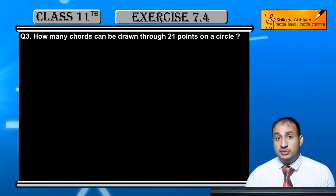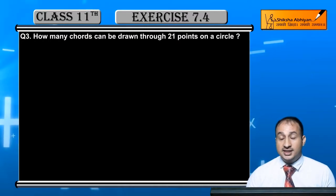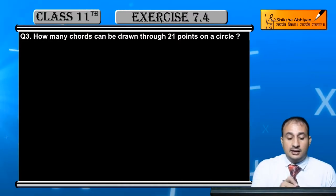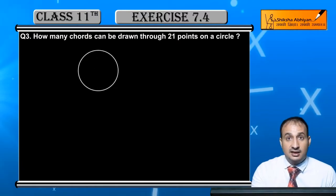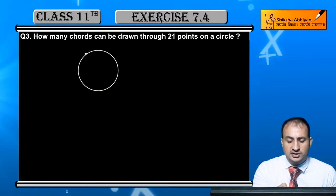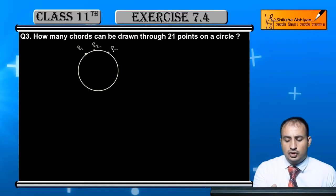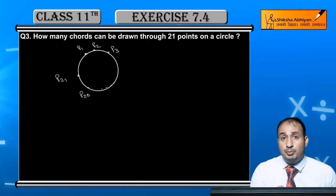How many chords can be drawn through 21 points on a circle? This is a circle, and you can see this circle has 21 points - point one, point two, point three and so on. You can see 21 points are given, and now there are so many 21 points, how many chords can be drawn?